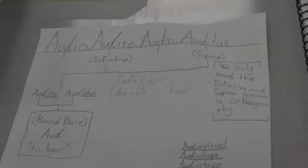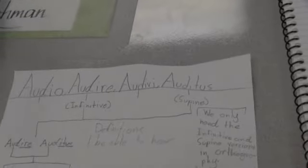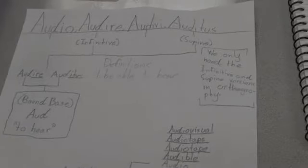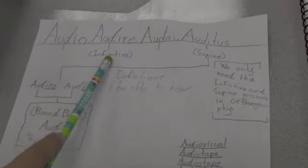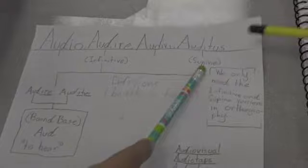So, tell me what you have found by looking at this Latin verb. Well, we looked at this Latin verb called audio. In orthography, we only need the infinitive, audere, and supine.